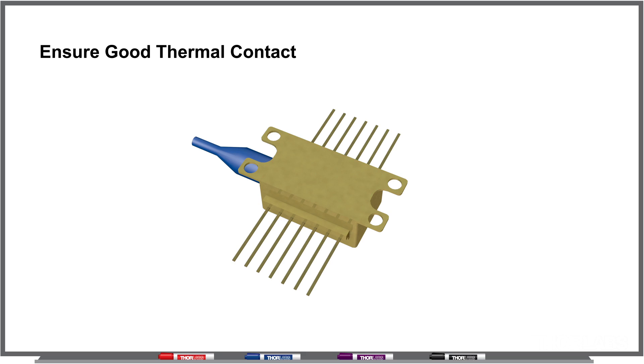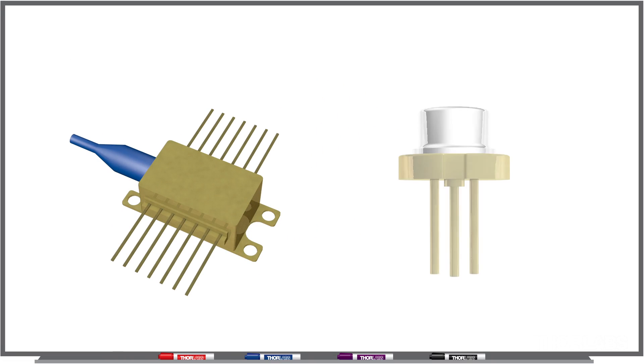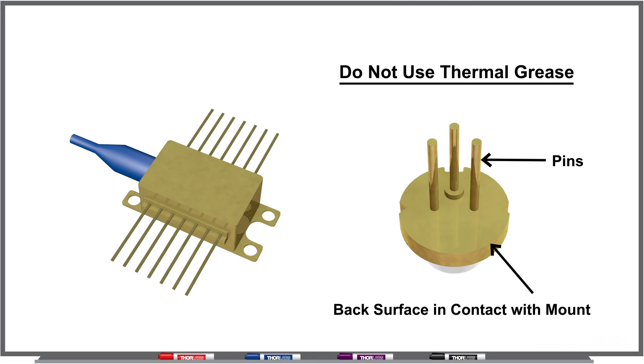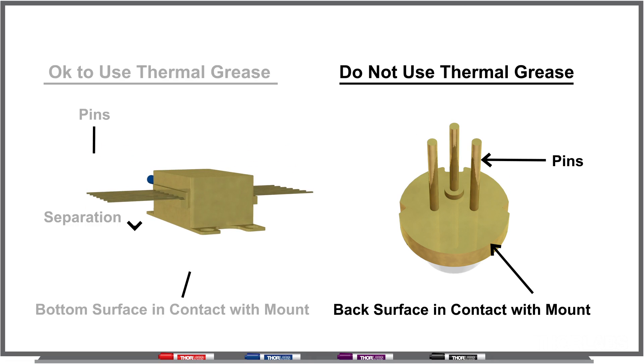But it's important to note that it's only really good to use thermal grease with a laser mount that does not have the electrical connections on the same surface that is in contact with your heat sink. For example, a TO can laser has the electrical pins on the back surface, and so if you use thermal grease, it would get all into the electrical connections and make a mess. But the butterfly package has separation from the bottom of the laser package and the electrical connections, so it's okay in this case.